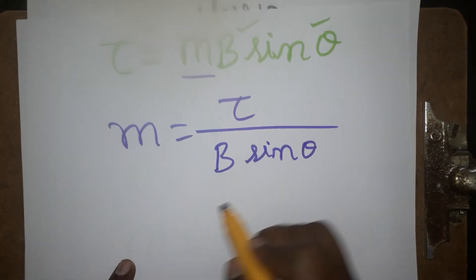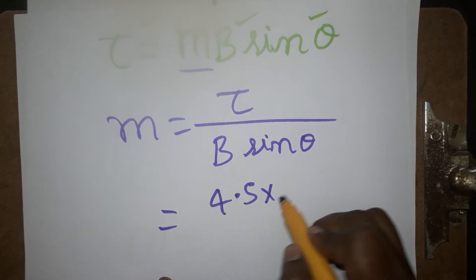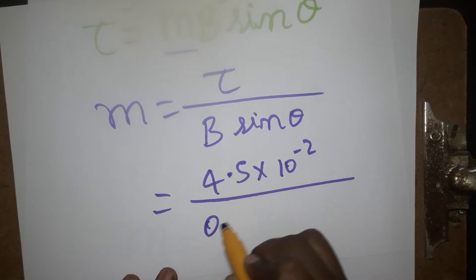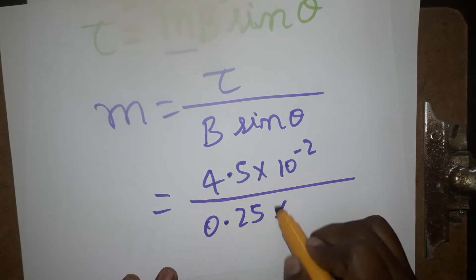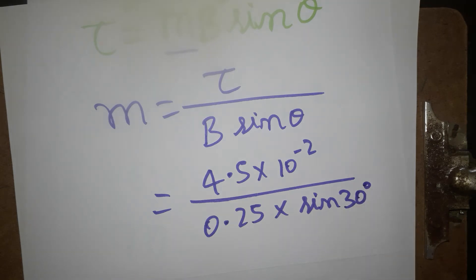In this formula, torque is 4.5×10⁻² joules, magnetic field is 0.25, and sin 30 degrees we can take as 1/2.